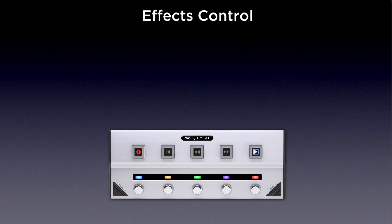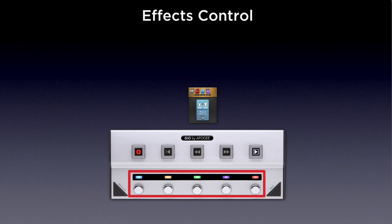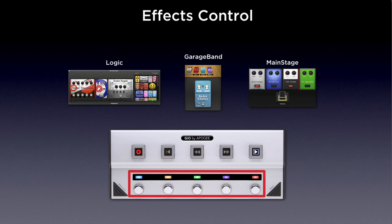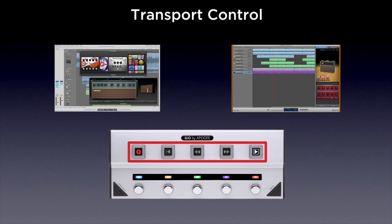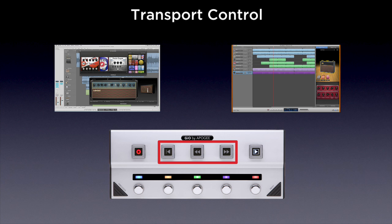With GEO you can audition effects pedal presets in GarageBand, Logic and Main Stage and turn them on and off while playing or recording, all without touching your keyboard. The five transport buttons on GEO let you record, play, stop and quickly navigate through your track without taking your hands off your guitar.